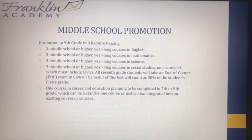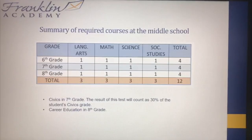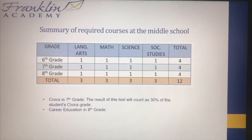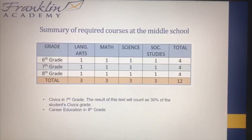It is also mandatory to complete one course in career and education planning, either in seventh or eighth grade. At Franklin Academy, our students complete this course in eighth grade. So as a summary, our students during middle school — grades six, seven, and eight — need to complete three courses in Language Arts, three in Math, three in Science, and three in Social Studies, for a total of 12 core classes over those three years. Also required: a seventh-grade civics class with an EOC, and a career education class taken in eighth grade.